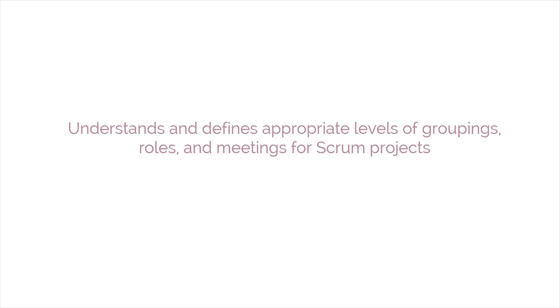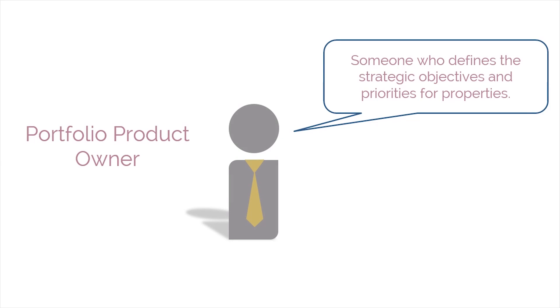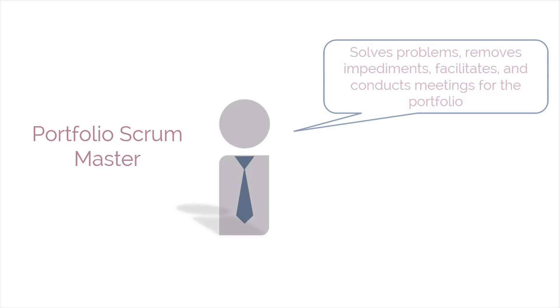Similar to a project, in portfolios, one of the important roles for managing Scrum is that of a portfolio product owner. He's someone who defines the strategic objectives and priorities for portfolios. The portfolio Scrum Master is the next role. He or she solves problems and removes impediments, and facilitates and conducts meetings for the portfolio.